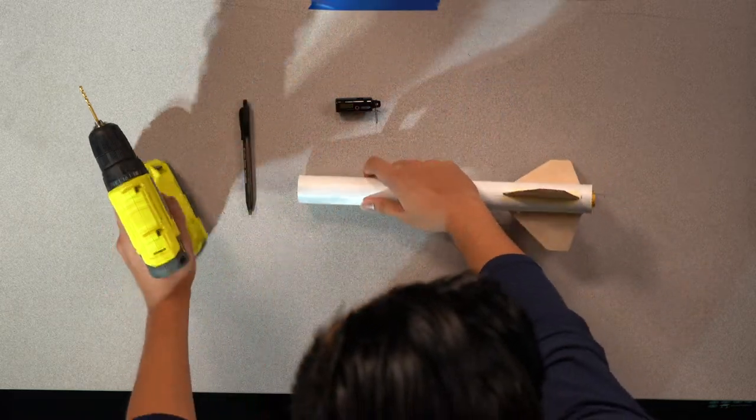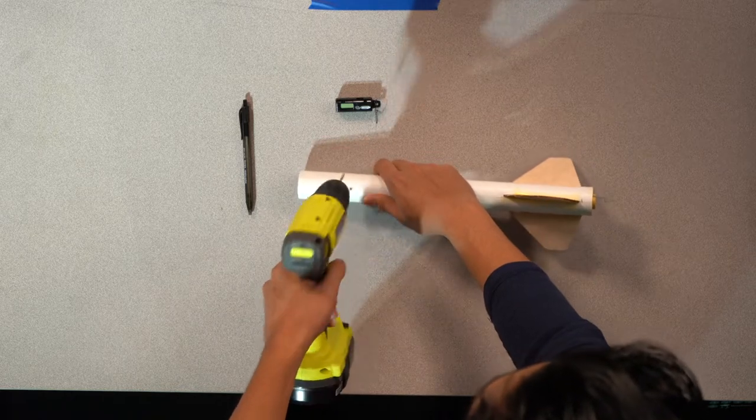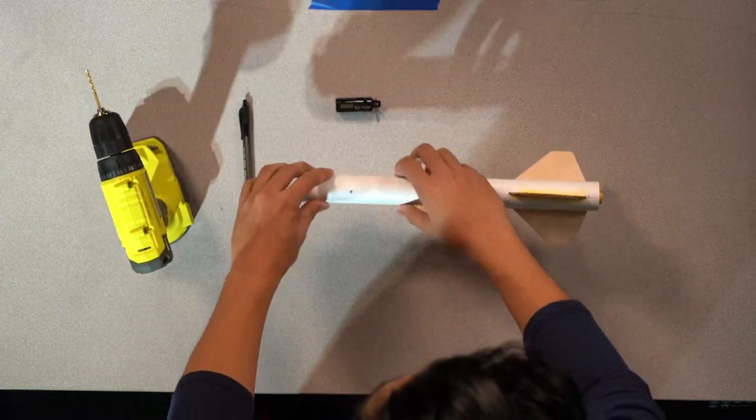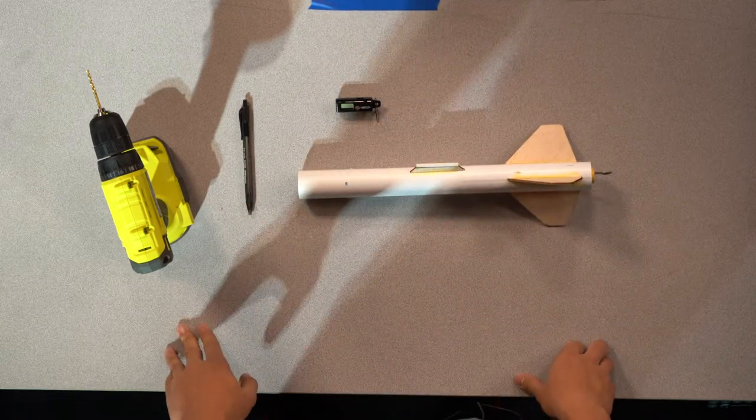So, we can just drill a fourth hole. That marks the end of drilling holes into the body tube for the altimeter.